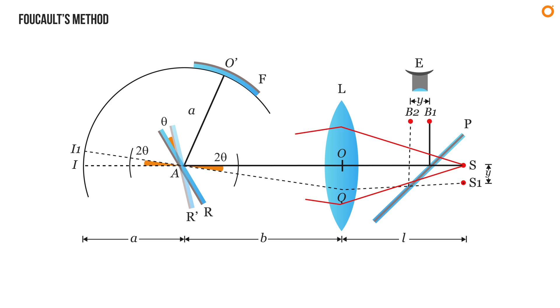In this way we can determine the speed of light using Foucault's method. I hope from now on all of you can easily find the expression for the determination of velocity of light using Foucault's method.